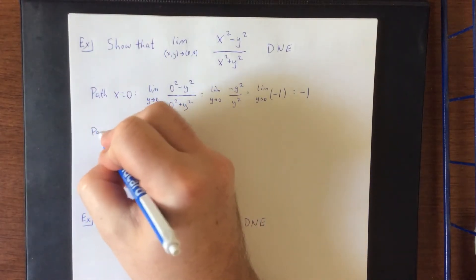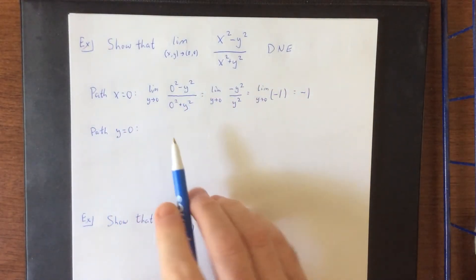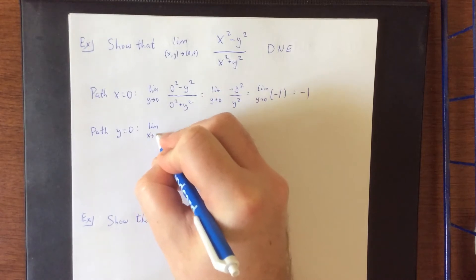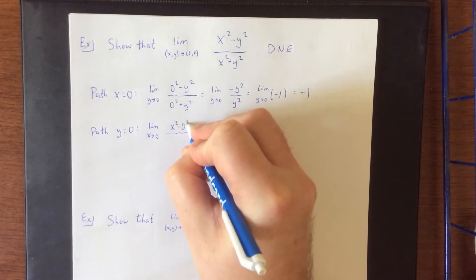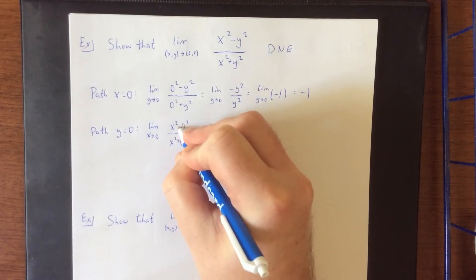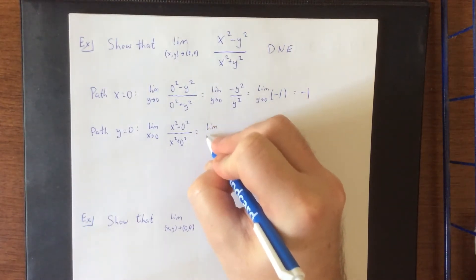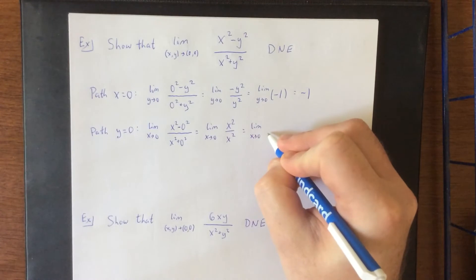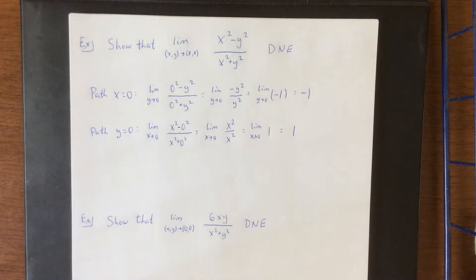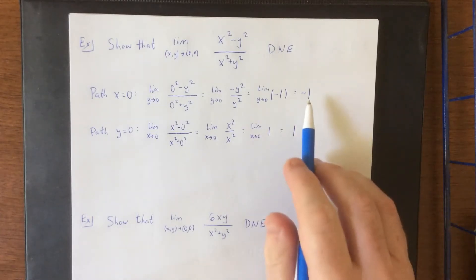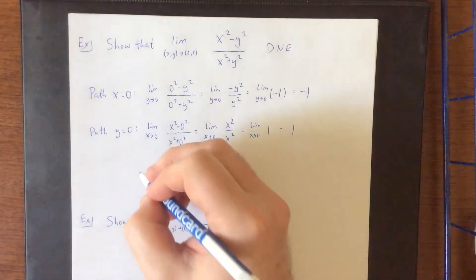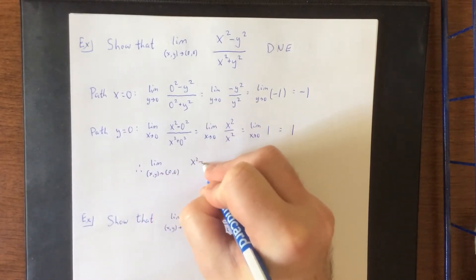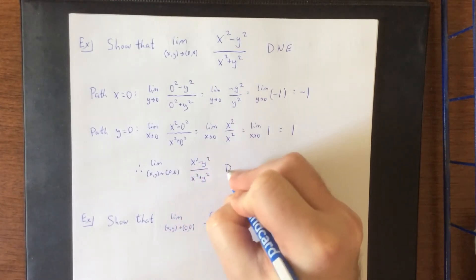Now if we try the path y equals 0, which is the horizontal line passing through (0, 0), we substitute y = 0 and get the limit as x approaches 0 of x squared minus 0 squared over x squared plus 0 squared. Simplifying top and bottom gives the limit as x approaches 0 of x squared divided by x squared, which simplifies to the limit of 1, equaling 1. Since we've arrived at two different values along two different paths, we can conclude the limit does not exist.